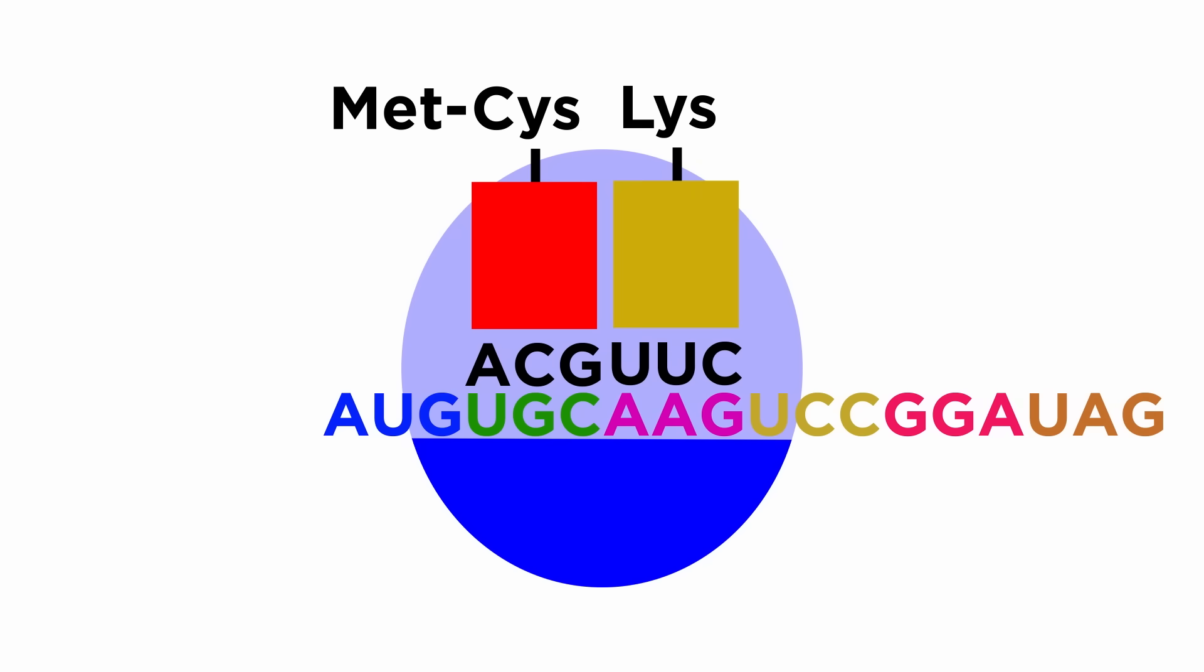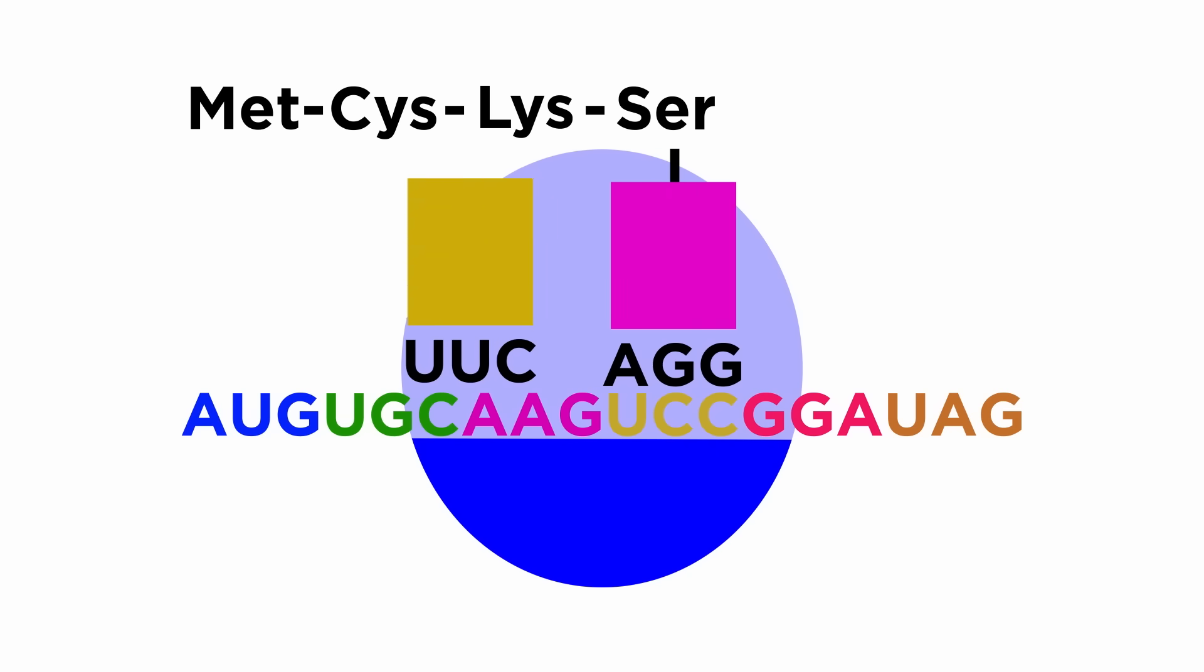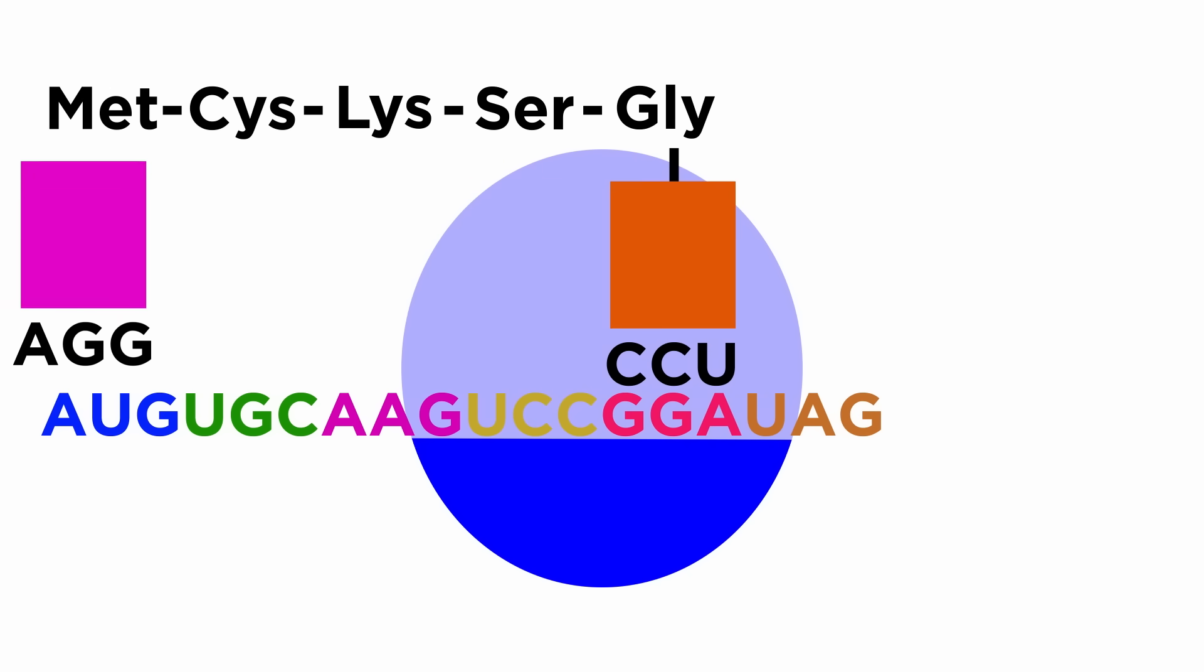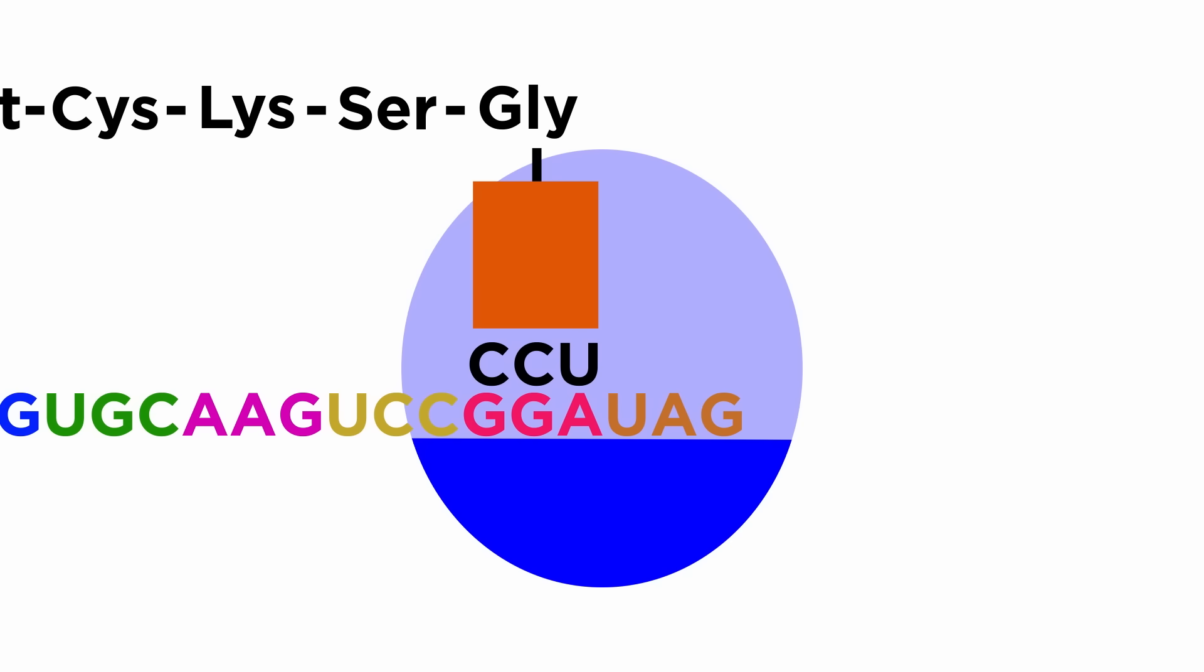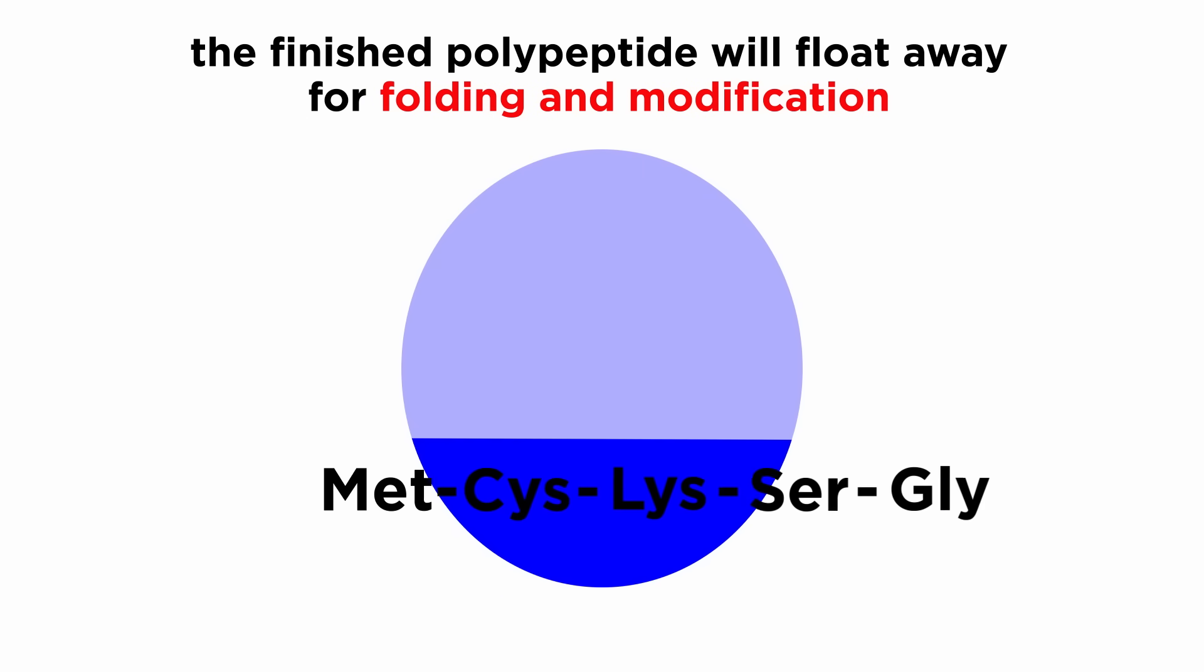The new amino acid links to the first two, and this process continues all the way down the mRNA. As tRNAs enter and exit the ribosome in a sequence that is dictated by the codons on the mRNA, a polypeptide chain will grow. This continues until a stop codon is reached, at which point the completed polypeptide will swim away, most likely entering one of the cell organelles for folding and further modification.